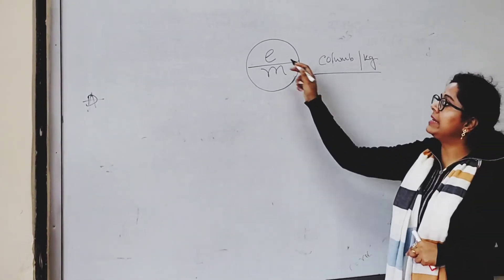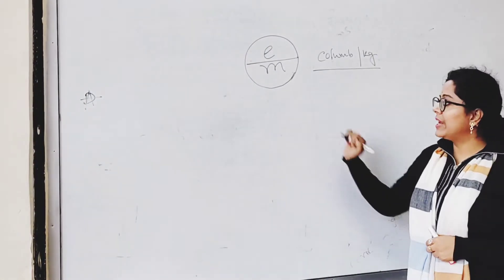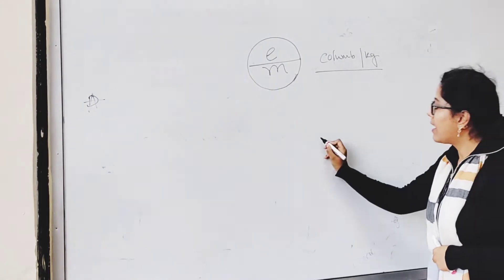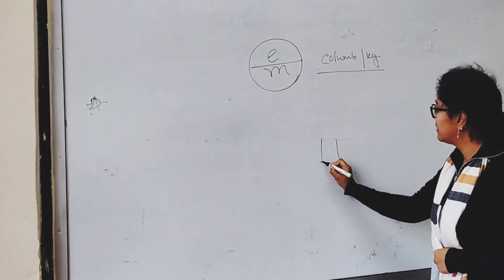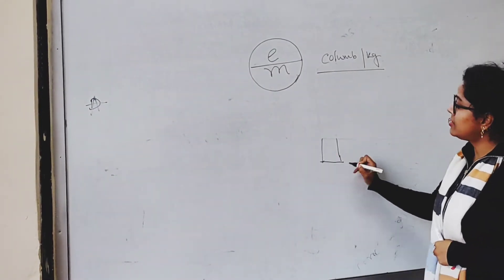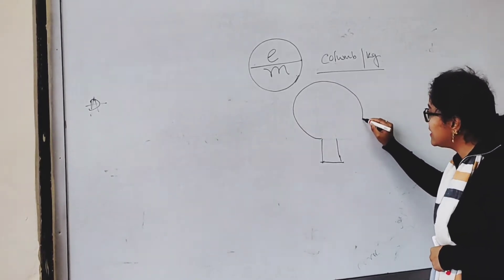So how to calculate e by m or specific charge? We are going to use here an electron gun that is attached in a socket and there is a circular tube.